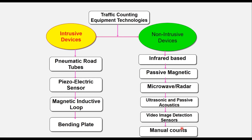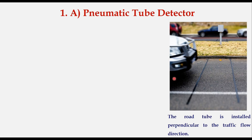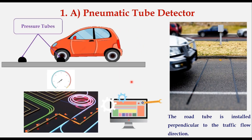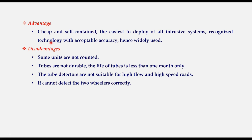In case of pneumatic tube detector, a road tube is installed perpendicular to the traffic flow direction. When a vehicle or a pair of wheels hits the tube, air pressure in the tube activates the data logger which records the time of the event. The data logger can detect the vehicle direction by recording which tube is crossed first. The advantage of this method is it is cheap, self-contained, easy to deploy, and has acceptable accuracy. The disadvantage is that accuracy is not 100%, tubes are not very durable with a life of less than one month, they are not suitable for high flow and high speed roads, and they cannot detect two-wheelers correctly.